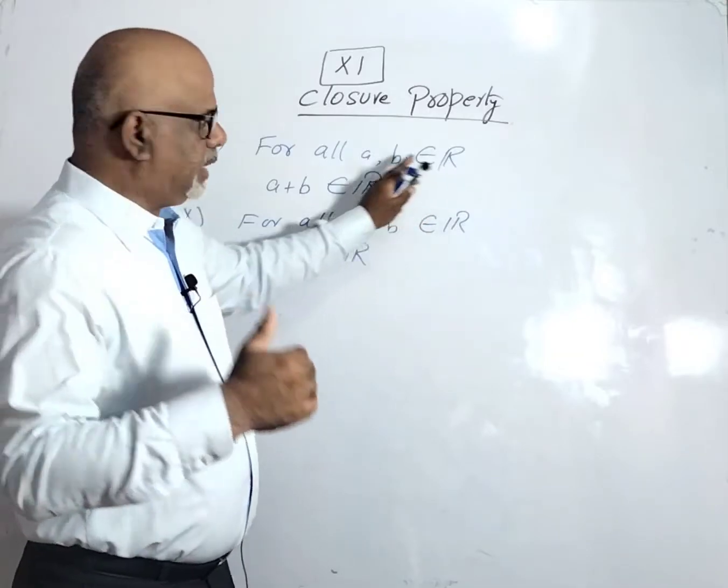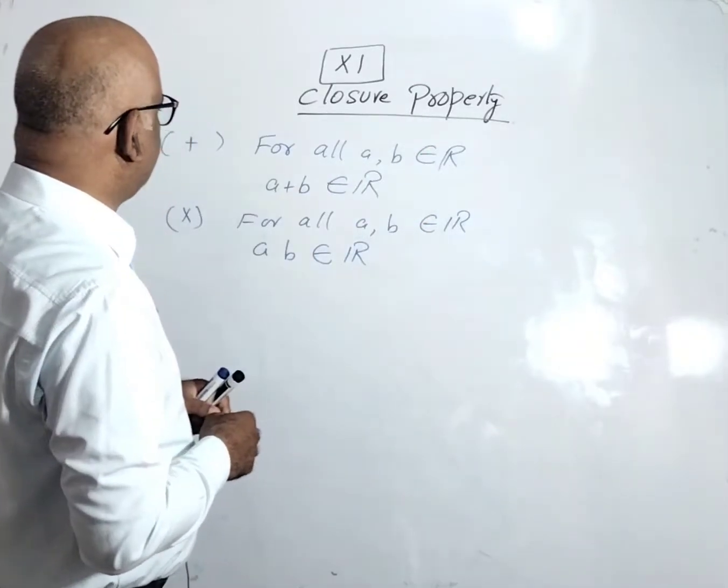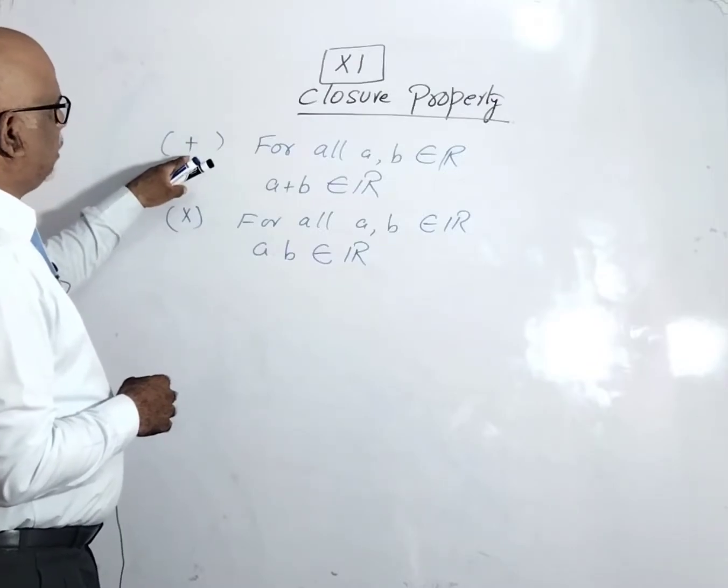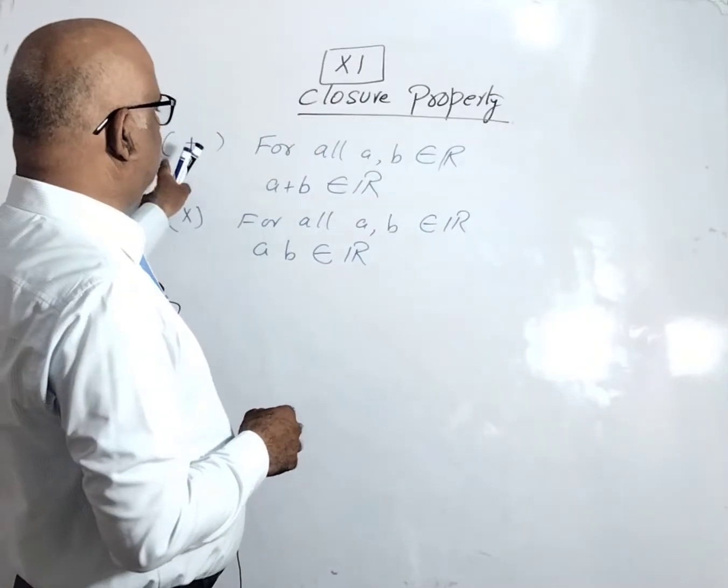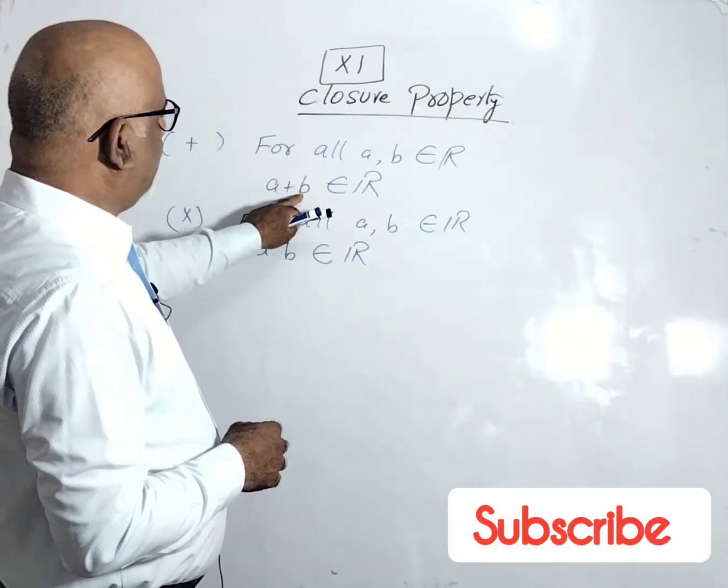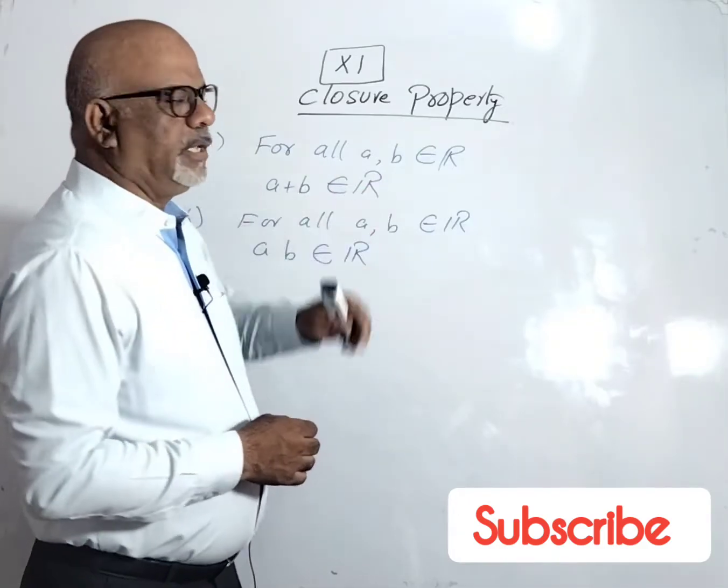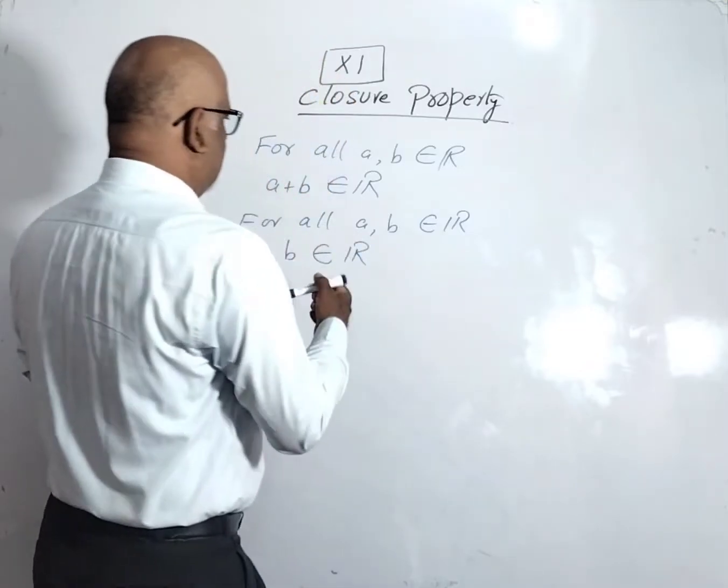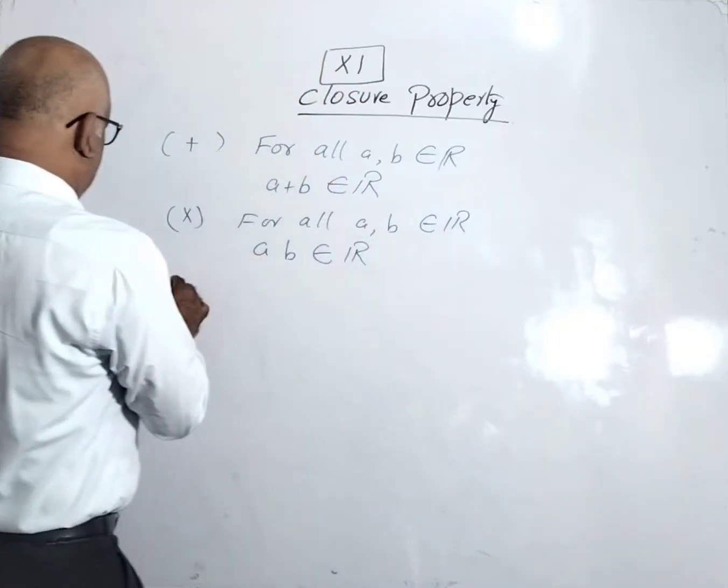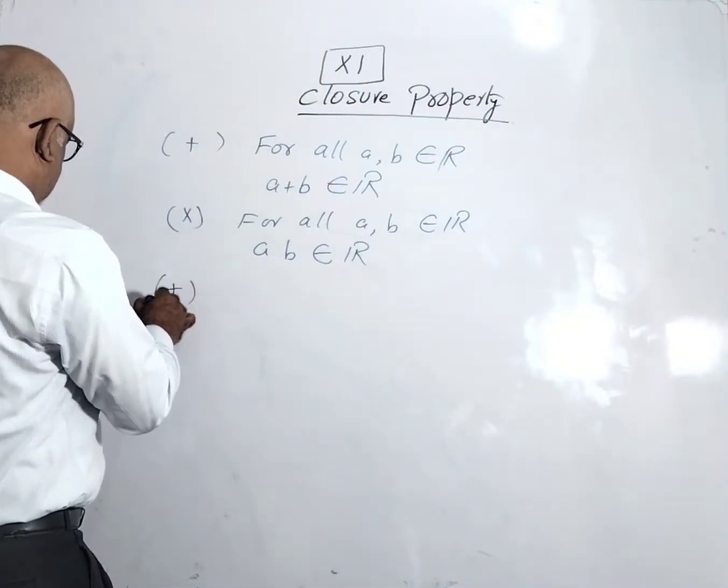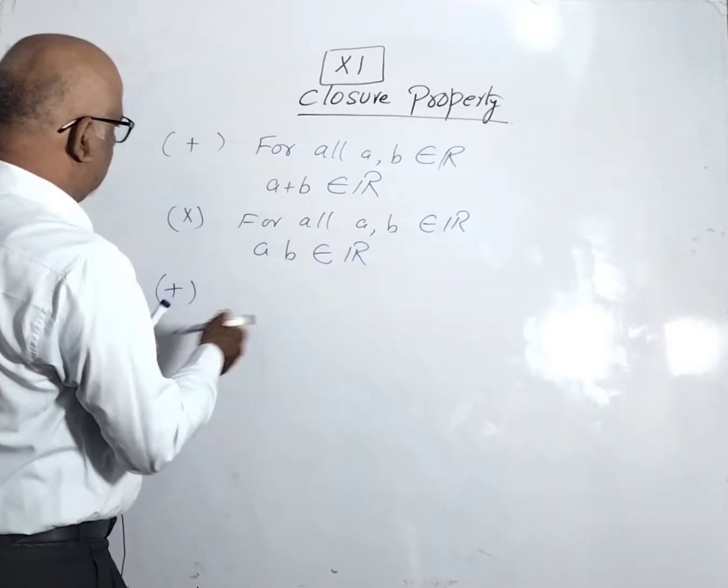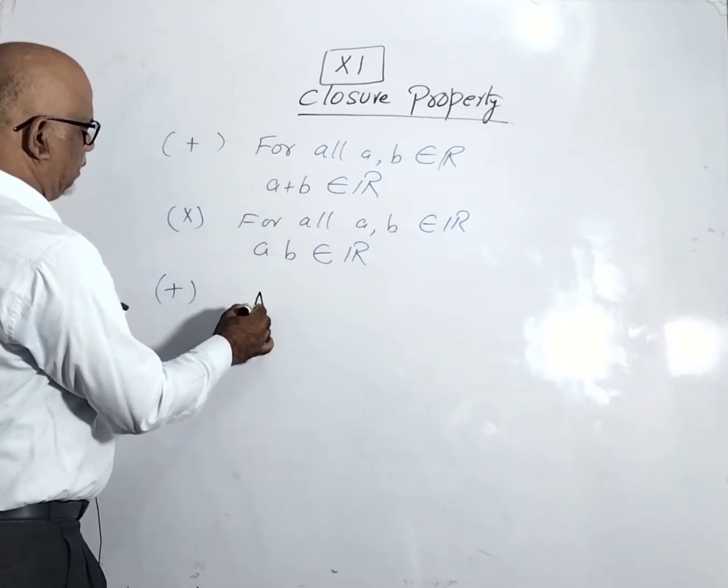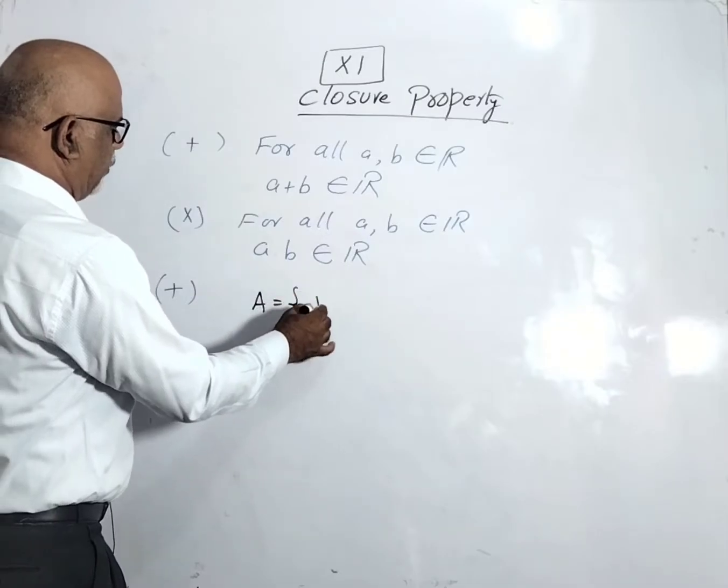a and b belong to the set of real numbers. If we discuss the closure property under addition, then a plus b should belong to the set of real numbers. For example, under addition, we consider set A that is {1, 2, 3, and so on}.